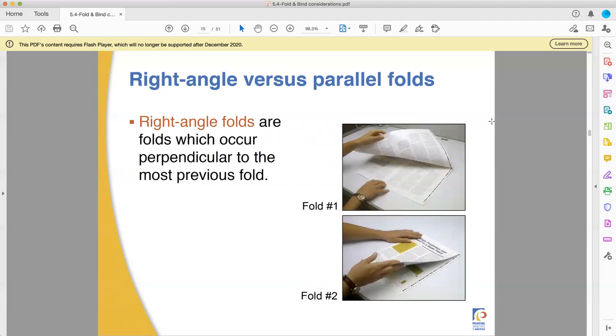So if you're doing a right angle versus a parallel fold, right angle folds are perpendicular to the previous fold. So you fold one way, then you fold the other way. I'm going to see number one and two here. If you're folding the paper into quarters and the quarters are going to be roughly the same proportions as the original, that is what you're doing with a right angle fold.